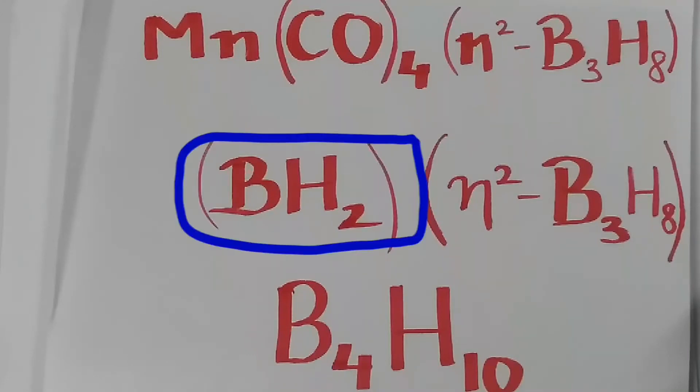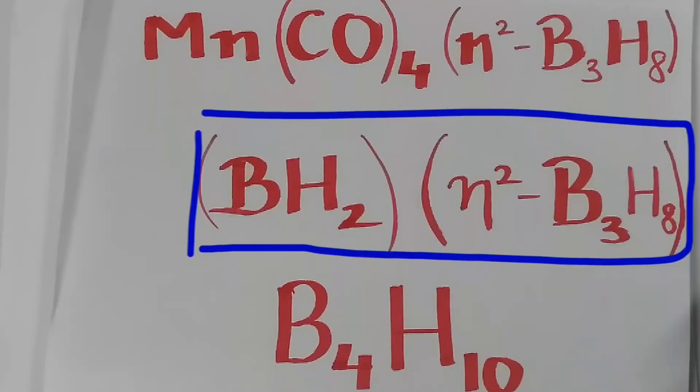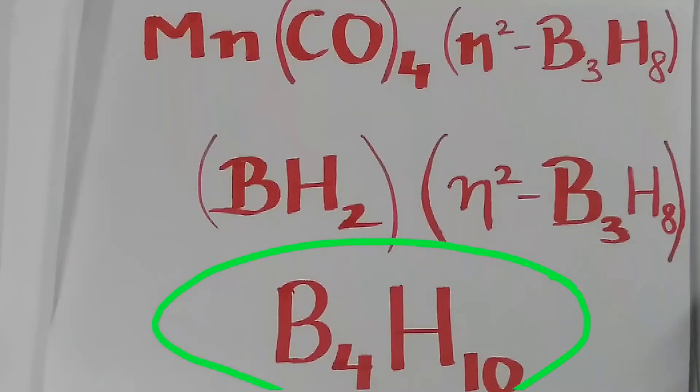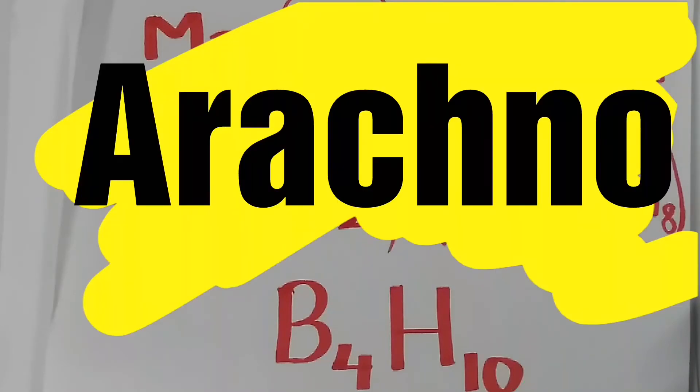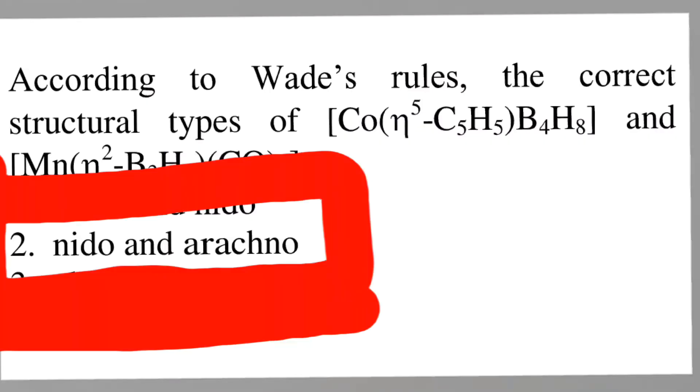After substituting BH₂ for Mn(CO)₄ and simplifying we get B₄H₁₀ and the structure is arachno. Option B, NIDO and arachno is the right choice.